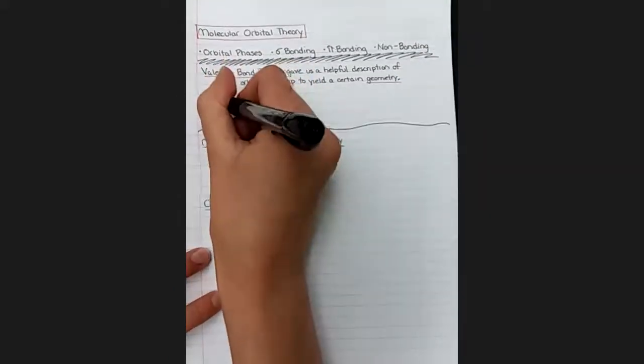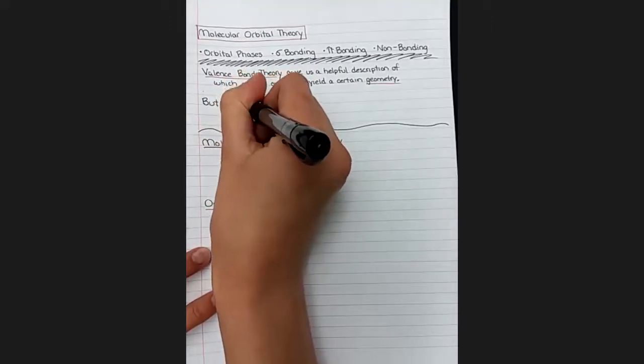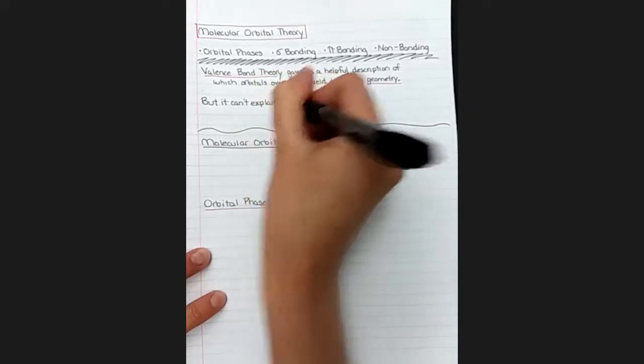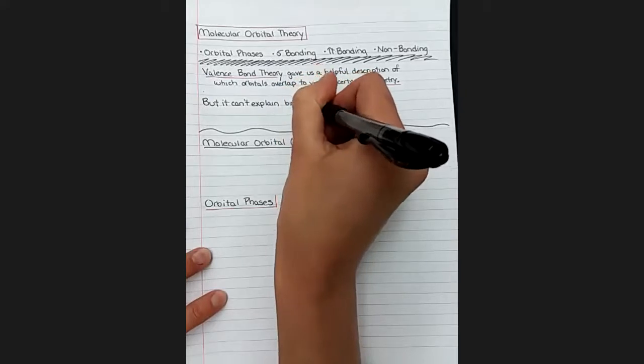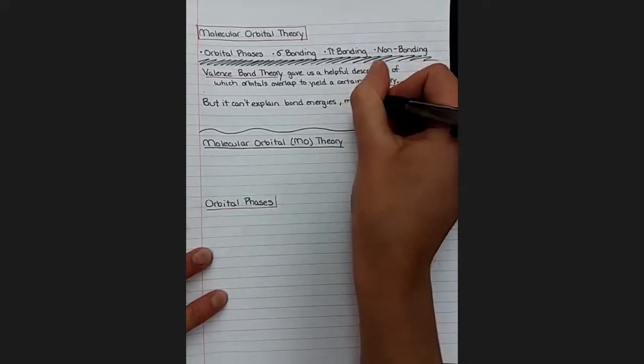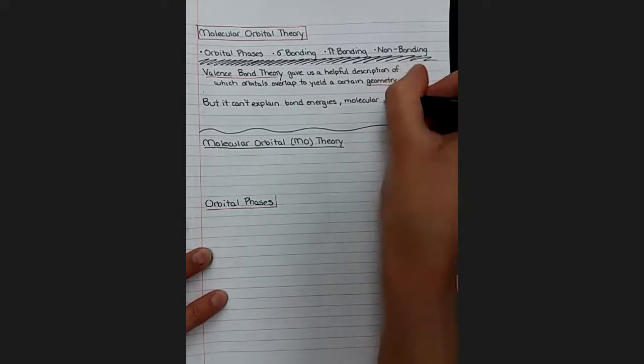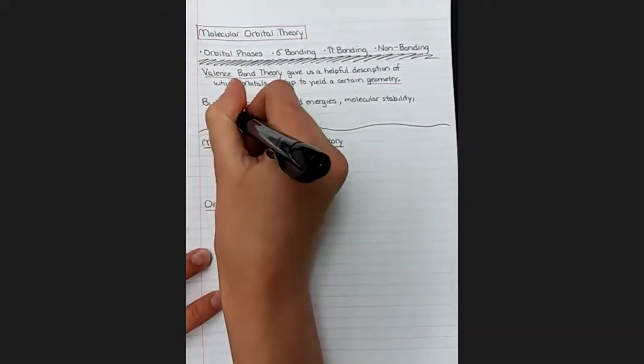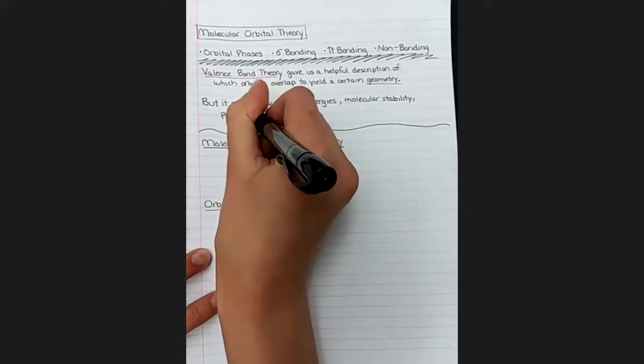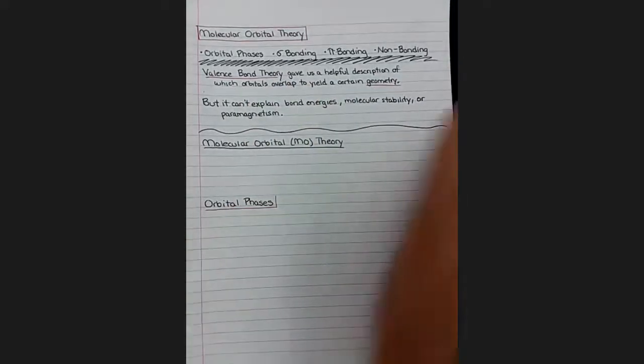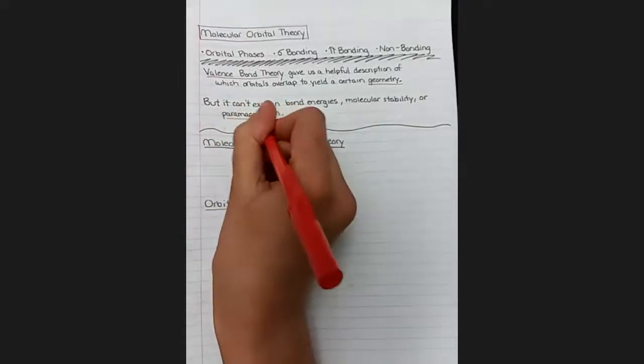But valence bond theory can't explain everything, so we have a second bond theory to help us explain things like bond energies and why one bond may have more energy than another one. It can't explain molecular stabilities or predict whether a particular molecule would be able to exist in a stable way or whether it wouldn't exist. And it can't explain something called paramagnetism, which we haven't learned about yet, but we'll talk about briefly at the end of this unit.